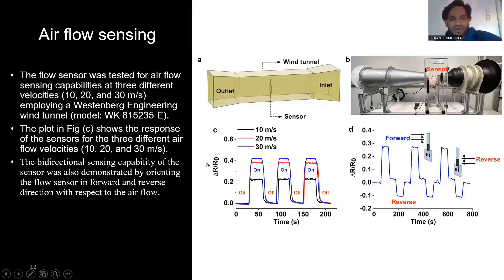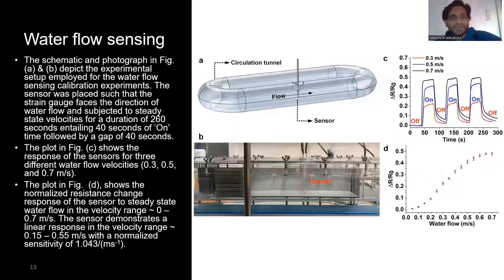Here you can see the sensor resistance output. With increasing velocity, the resistance change also increased with the velocity of the wind. In figure 4D, you can see the forward and reverse wind flow of the sensors. You can see the intervals for forward and reverse, and the sensor resistance output is shown in figure 4D. This shows sensitivity towards wind sensing in the wind tunnel.